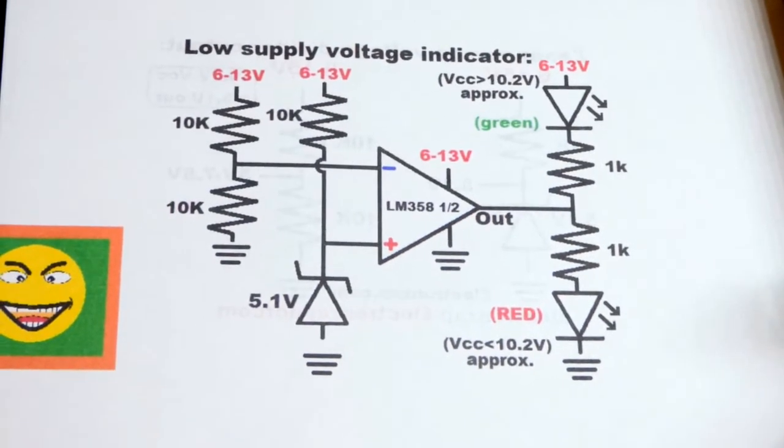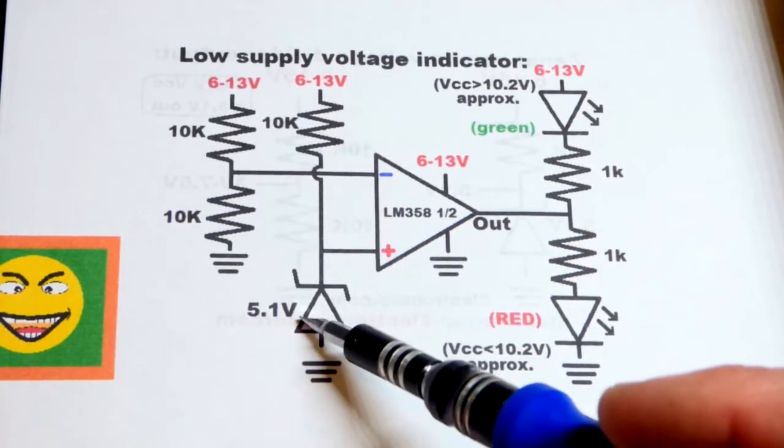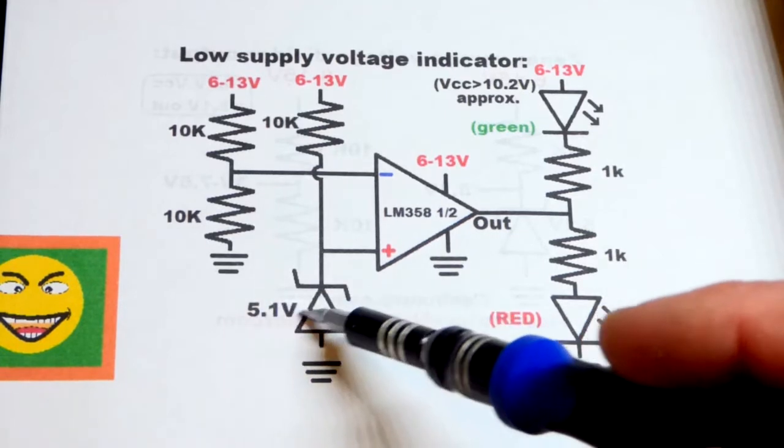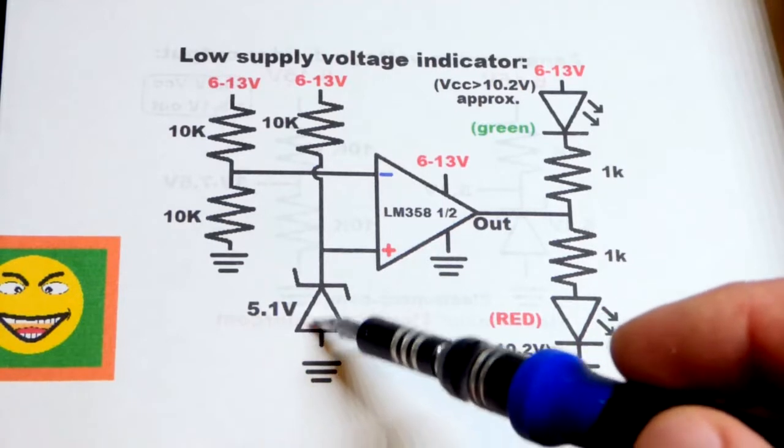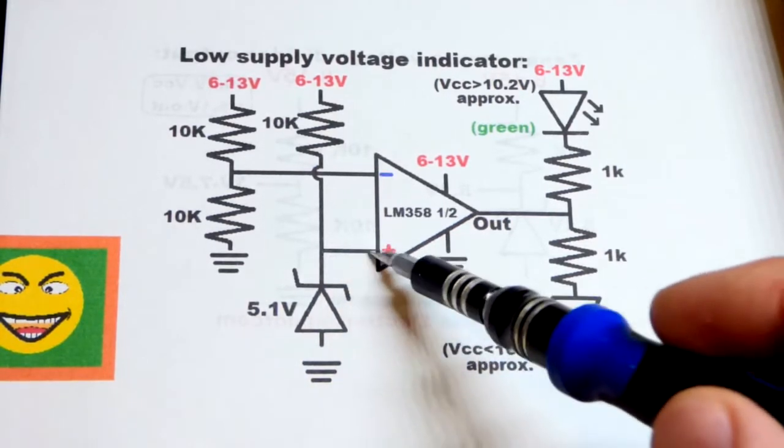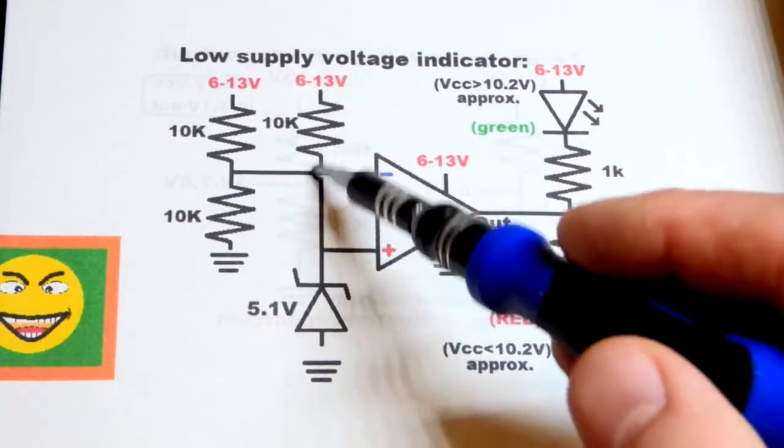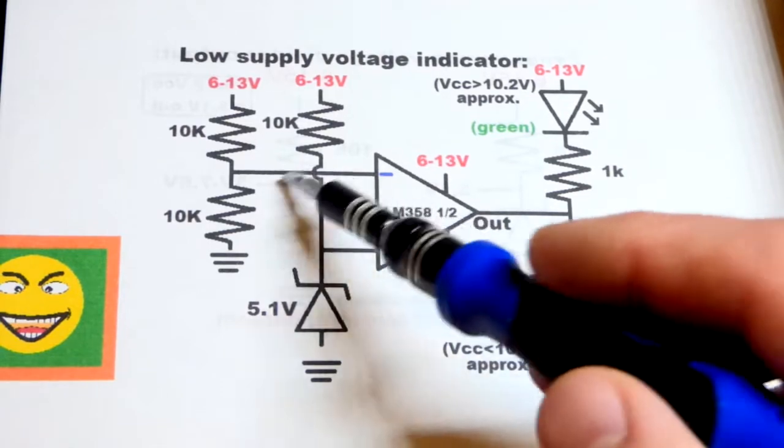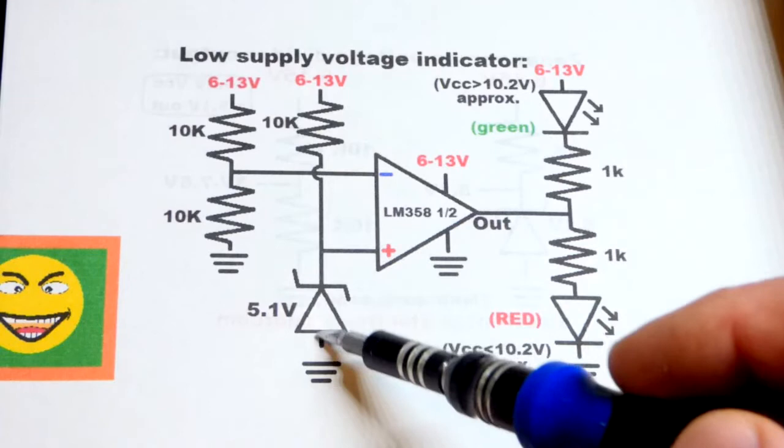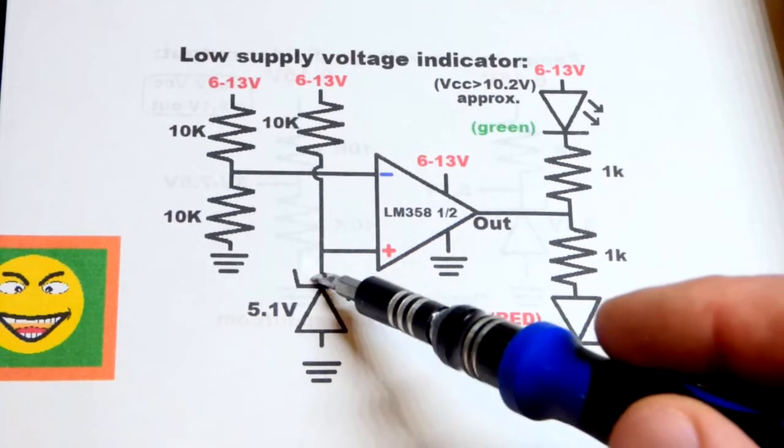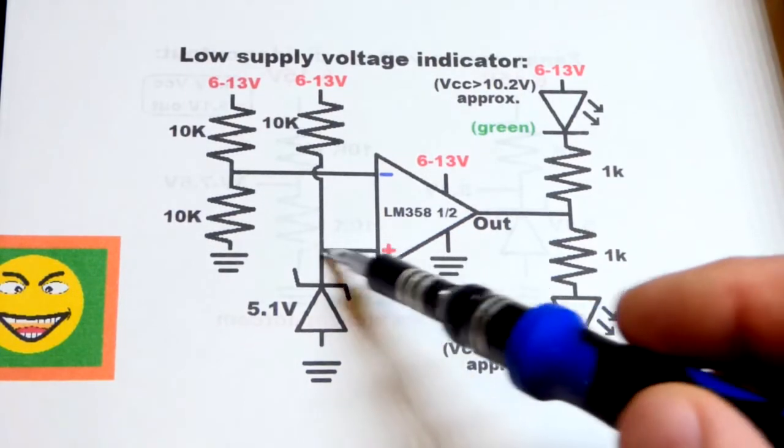We have a 5.1 volt zener diode to get close to five volts. We're setting the non-inverting input to 5.1 volts because we have a 10 kilohm resistor jumping over that wire. Current flows through the 10k resistor and the zener diode.